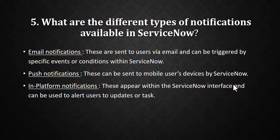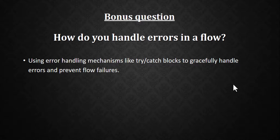Third, in-platform notifications — these appear within the ServiceNow interface and alert users to updates or tasks, such as Connect Chat messages or task assignments. There are also quick messages and messaging app integrations with third-party tools like Cisco, Teams, or Slack, but the three core types in documentation are email, push, and in-platform notifications.